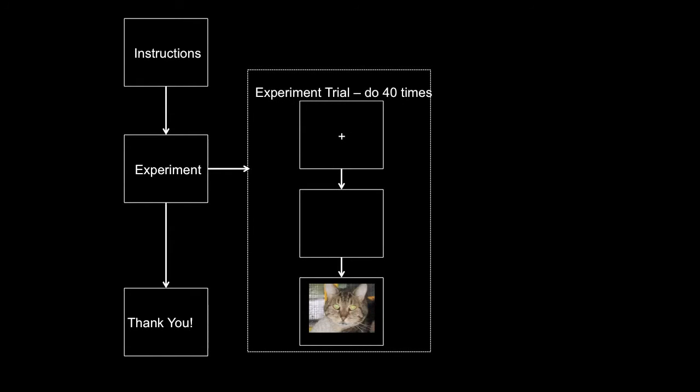Beyond the global structure, we have what takes place during the main experiment itself - the straightforward three objects where we display the fixation point, the blank screen, and the particular cat face, looped 40 times. There's a reason for plotting the experiment this particular way: if you think back to the overview area in the interface, you can see similarities between drawing the experiment out this way and how it appears in that overview window, helping us verify the experiment is built correctly.